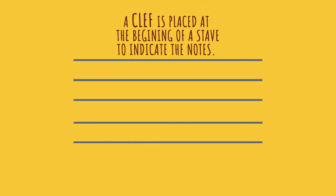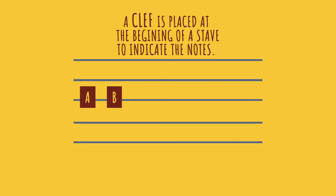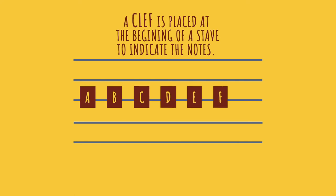Moving on, let's learn to recognize some clefts. A cleft is usually placed at the beginning of every stave to indicate the notes, using 7 letter names: A, B, C, D, E, F, G.